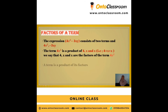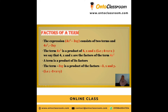Factors of a term — what is a factor? The expression 4x² - 3xy consists of two terms: 4x² is one term and -3xy is another term. The term 4x² is the product of constant 4 and variable x and variable x, that is 4 × x × x. We say that 4, x, and x are the factors of the term 4x². The term -3xy is a product of factors -3, x, and y. So -3, x, and y are the factors of the term -3xy.